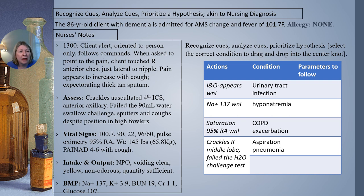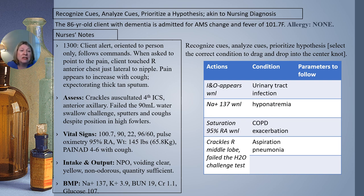When considering urinary tract infection, the intake and output is within normal limits — urine is clear, yellow, non-odorous, and quantity sufficient. Hyponatremia can be ruled out because sodium 137 is within normal limits. For COPD exacerbation, saturation is 95% on room air, so oxygenation is not terribly impacted. For aspiration pneumonia, we do have crackles in the right middle lobe, and the client also failed the water swallow challenge.